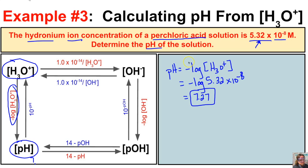So if we have a perchloric acid solution in which the hydronium ion concentration is 5.32 times 10 to the negative 8, it's going to have a pH of 7.27.